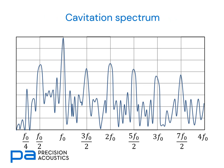We'll have seen from that previous tutorial that cavitation spectra can sometimes be very complex. Here we can see multiple harmonics, sub-harmonics and ultra-harmonics of the fundamental F0. What's also important to note is the difference in amplitudes — quite often the fundamental can be some 40 dB larger in amplitude than the next nearest spectral component.